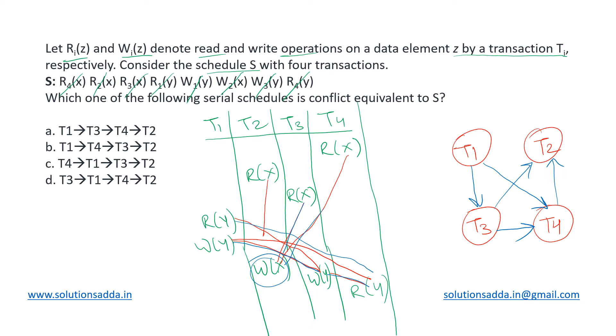So this is the precedence graph that we get. And now we will write down the topological sort for this graph. And here we can see that T1 is the only node which is having no incoming edge, so that will be the first transaction to be executed.